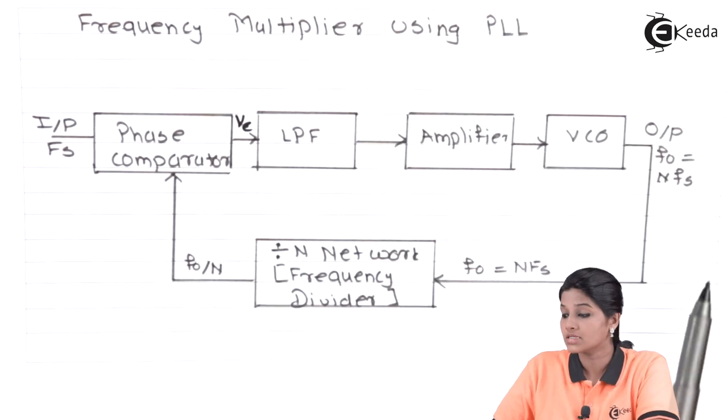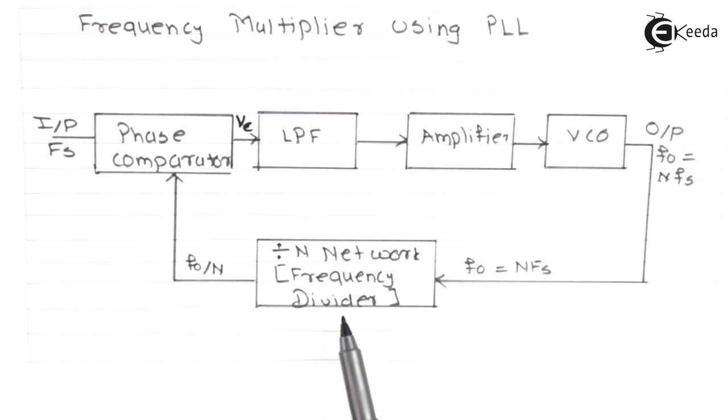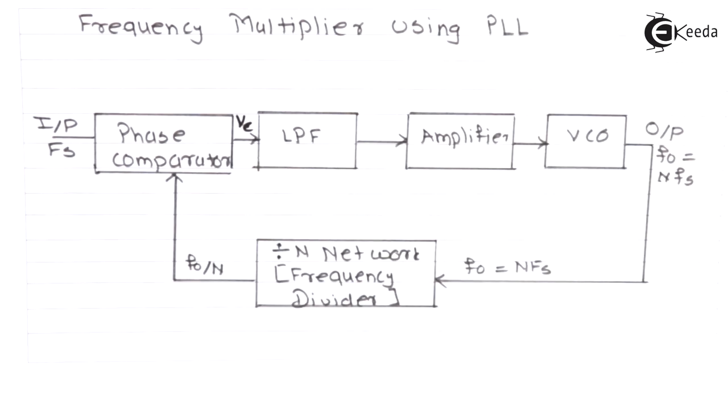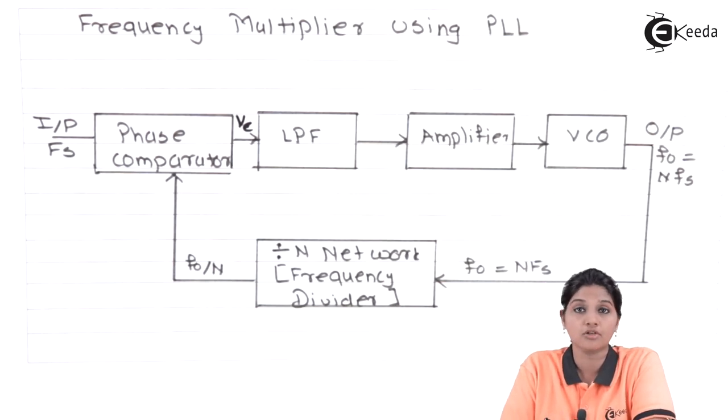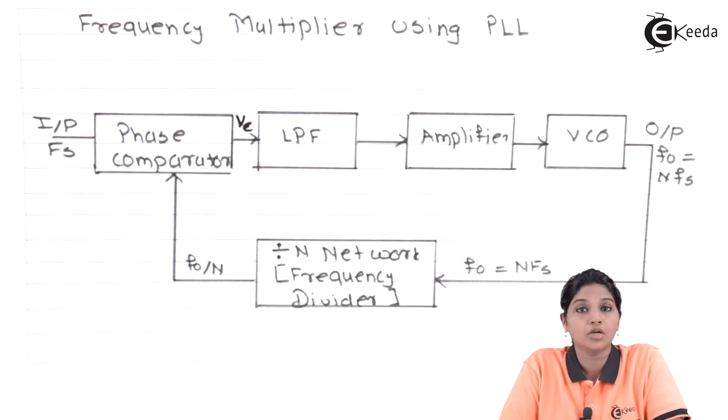This output acts as input to the next block, which is the divide by N network or frequency divider network. This acts as a feedback network connected between VCO and phase comparator. The divide by N network is used to remove the component N present at the output of VCO. The divide by N network has a signal of F0 by N, which acts as the second input to the phase detector. In this way, the circuit of PLL can be converted into a frequency multiplier.